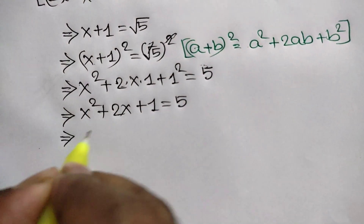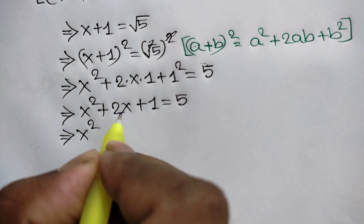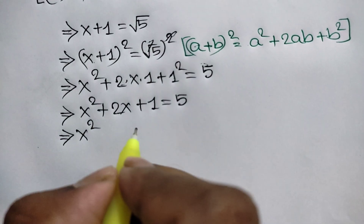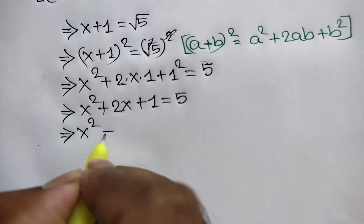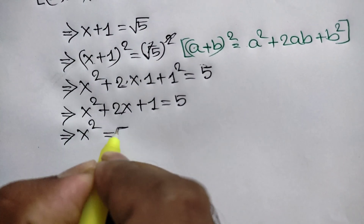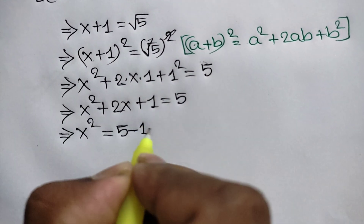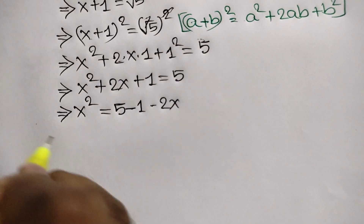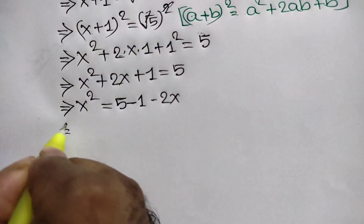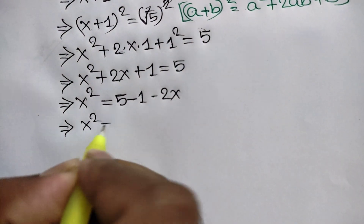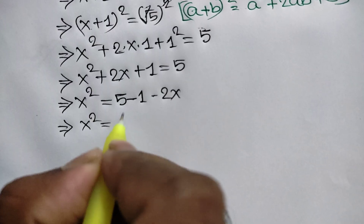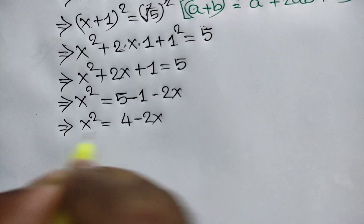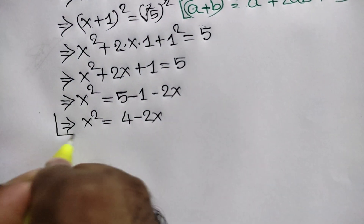Taking 2x and positive 1 to the right side, we get x squared is equal to 5 minus 1 minus 2x. So x squared is equal to 4 minus 2x. Mark this result.